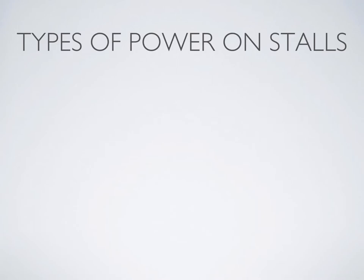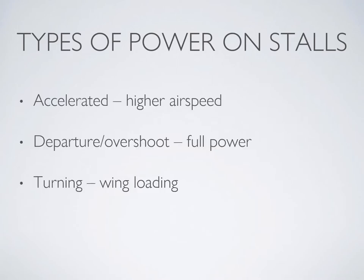Power on stalls can be grouped into three types of categories. Accelerated stalls occur at a higher airspeed due to a sudden change in the angle of attack, such as a sudden pitch up from a very nose down descent. Departure and overshoot stalls occur at a relatively low airspeed and result from excessive nose up attitude attempting to use pitch to gain altitude. Turning stalls result from too much pitch in an attempt to tighten the turn. Due to potential stress on the airframe, we don't usually demonstrate accelerated stalls.